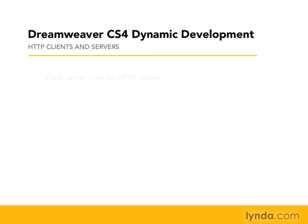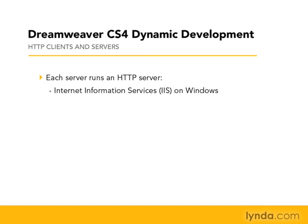When a request is sent over the web, it's received by a computer running a piece of software called an HTTP server. Common versions of this HTTP server software include Internet Information Services, or IIS, used on Windows, or Apache, a free HTTP server product that can be installed on many operating systems, including Windows, Mac, Linux, and many others.